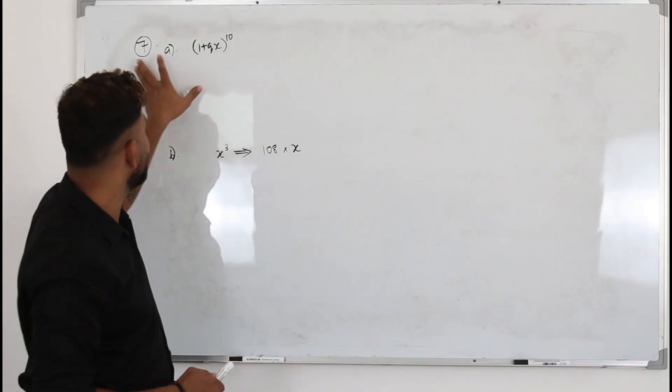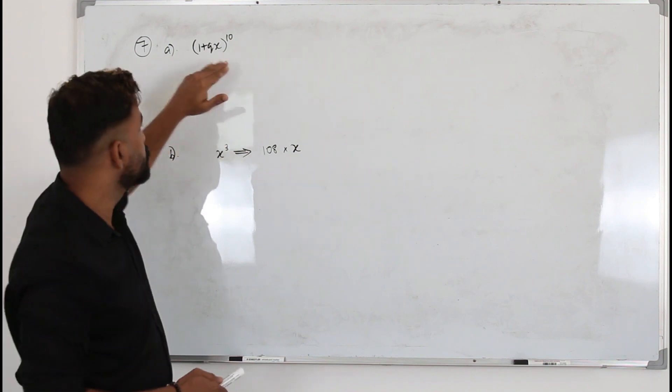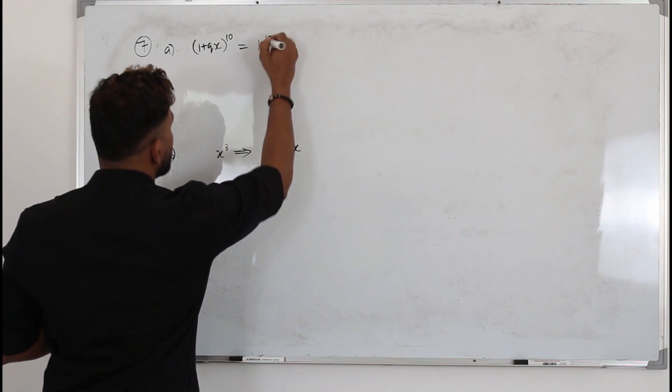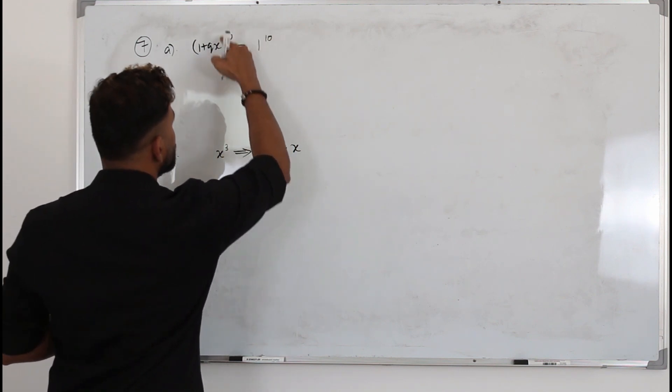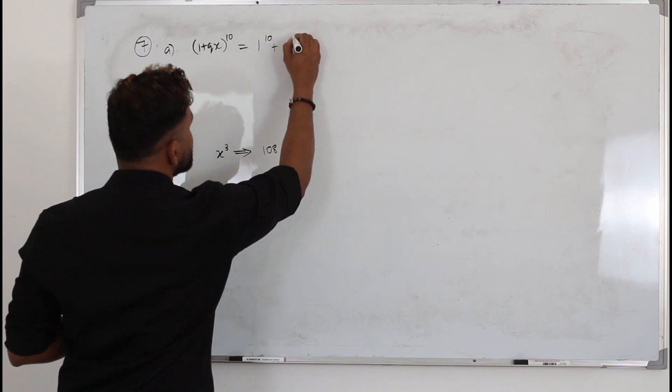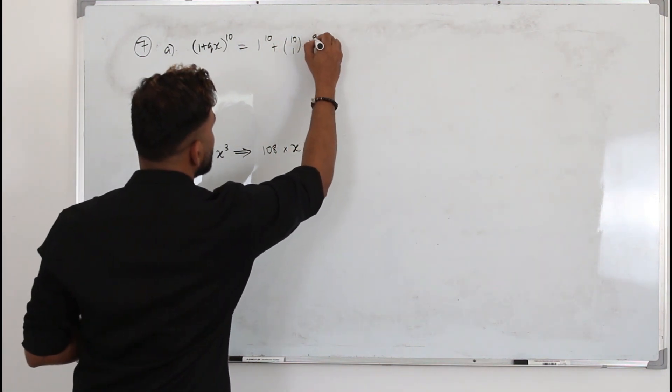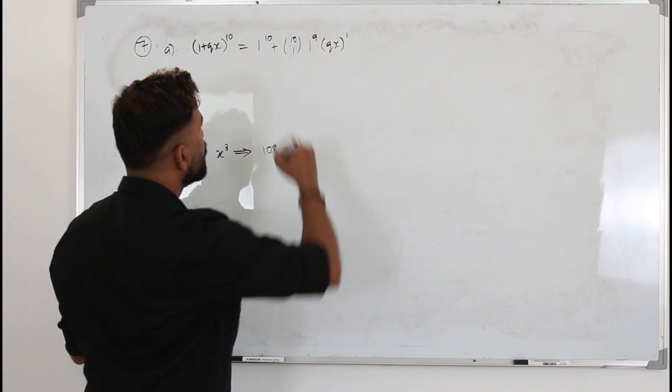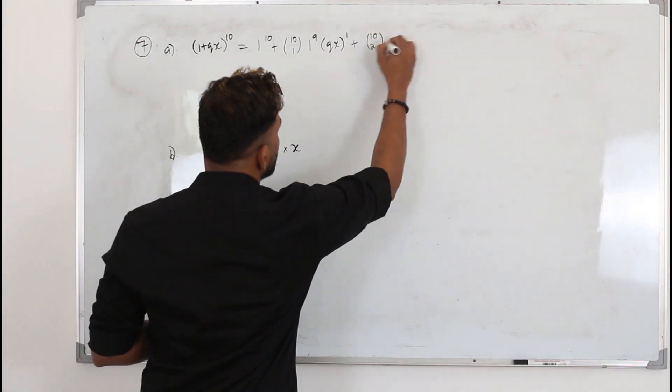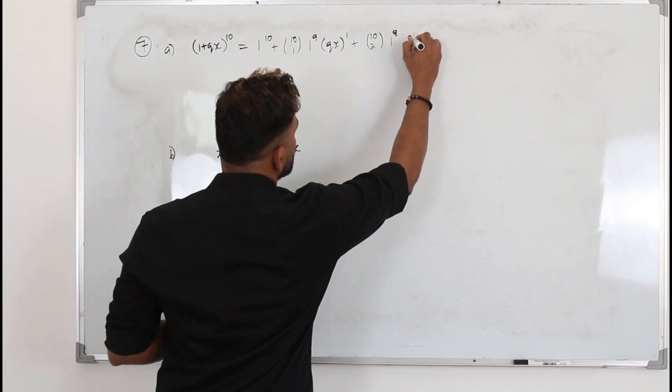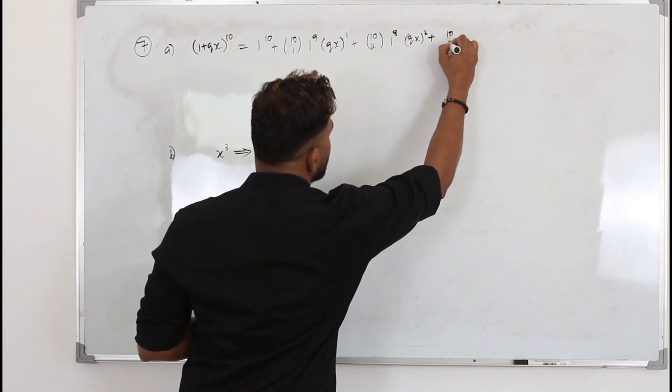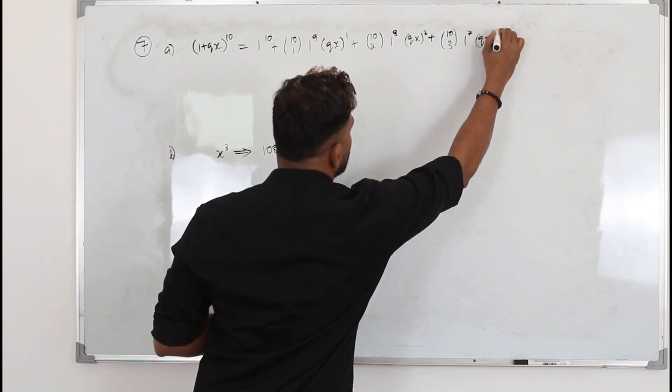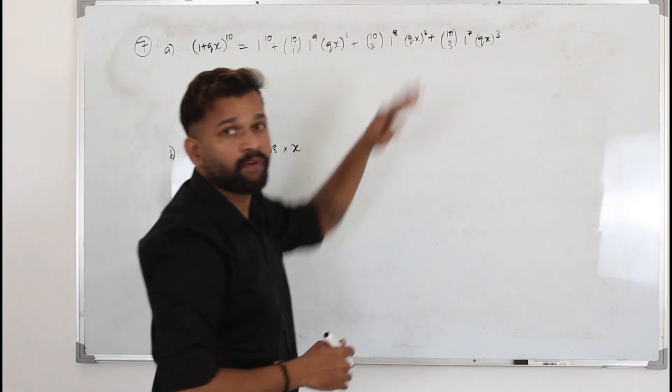Here in this question number 7, they want you to find the first four terms of this binomial expansion. So just apply the binomial expansion here. aⁿ. a is first term, n is power. This number (1+qx)¹⁰ plus second term will be 10C1 a^(10-1) b¹, b is qx here. And then 10C2 a^(10-2) b². 10C3 a^(10-3) b³. We got four terms: 1, 2, 3, 4 terms.